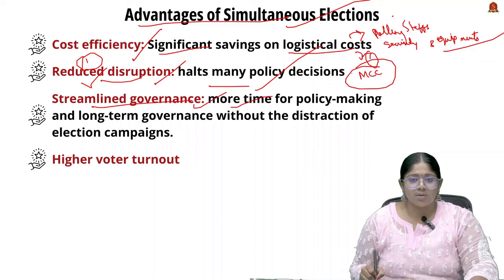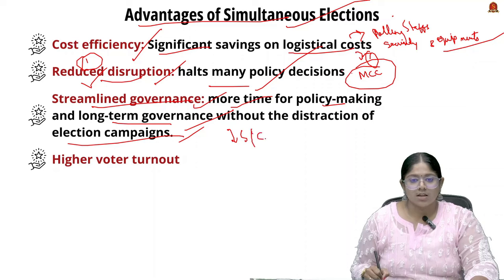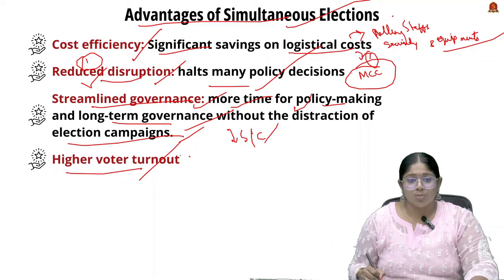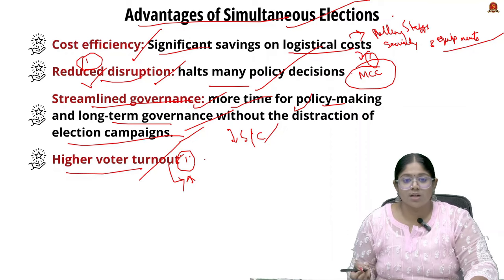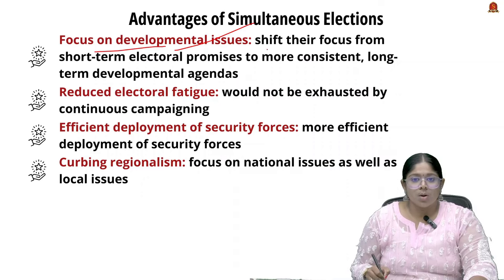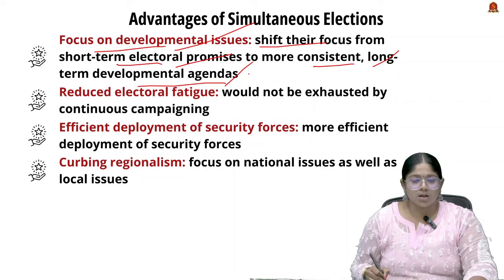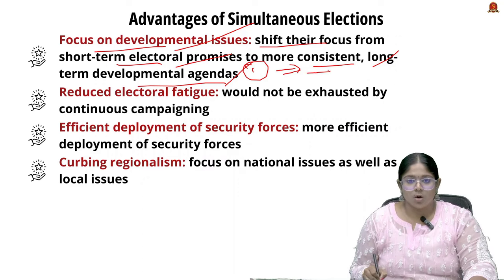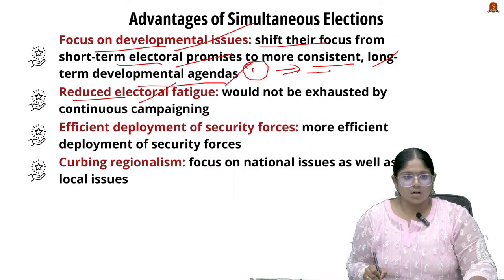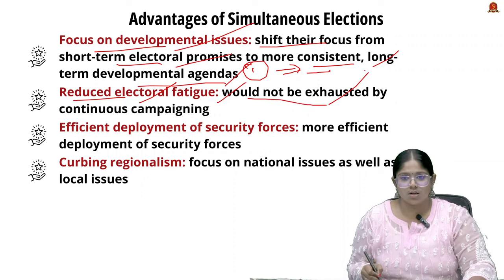Streamlined governance is another advantage, as there is more time for policy-making and long-term governance without the disruption of election campaigns for both state and central governments. Higher voter turnout is also expected, as citizens participating in one combined election would be higher compared to participation rates across many staggered elections. Additionally, political parties can shift focus from short-term electoral promises to consistent, long-term developmental agendas, as they are held accountable over a longer period.